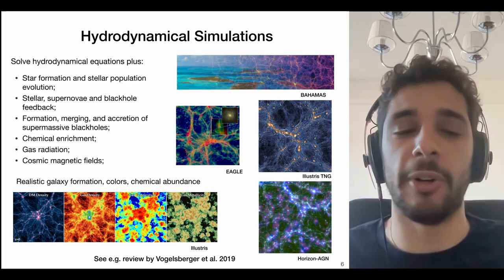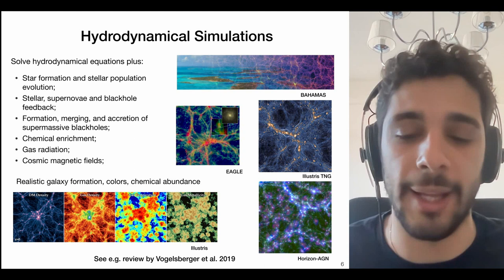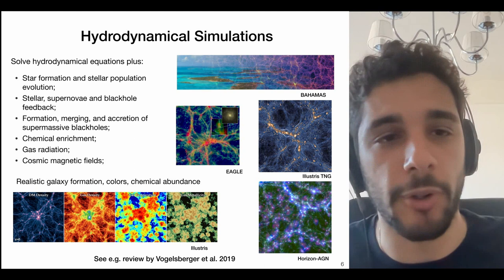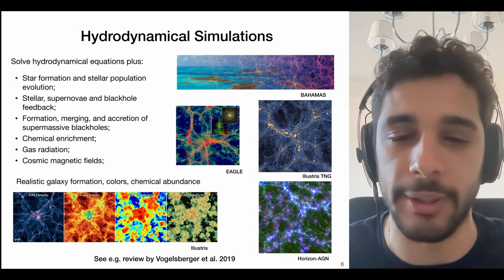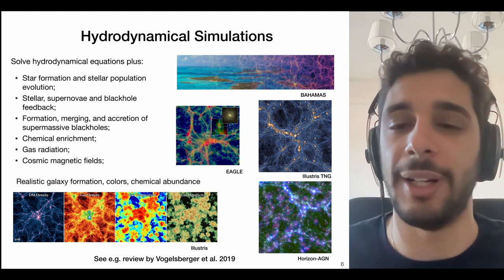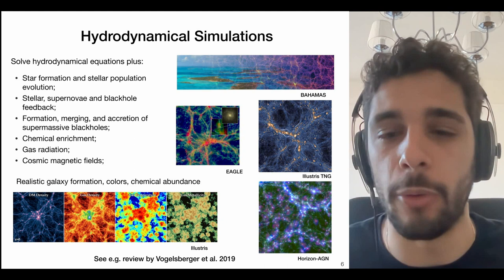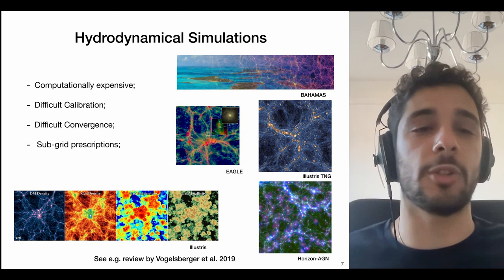In the end, you see how the cosmic density field looks quite dramatically different when only gravity is considered versus when baryonic effects are included. However, we cannot model baryonic effects through simple N-body simulations — we need to run magneto-hydrodynamical simulations that solve the Euler equations for hydrodynamics plus model astrophysical processes.